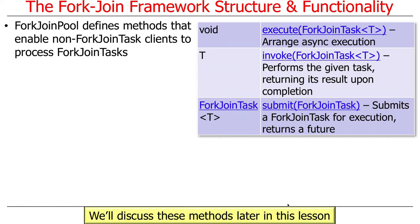The methods here are execute, invoke, and submit. All my examples use invoke, which takes a ForkJoinTask instance, performs what it's trying to do, blocks until the result is finished, and returns the result. Execute just asynchronously executes something without a result. Submit takes a ForkJoinTask, submits it to the ForkJoinPool for execution, and returns a Future. A ForkJoinTask is basically a Future.